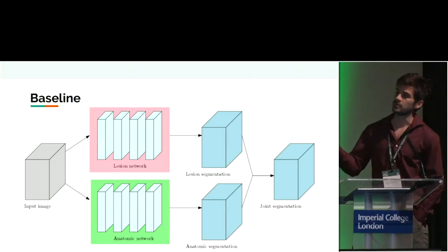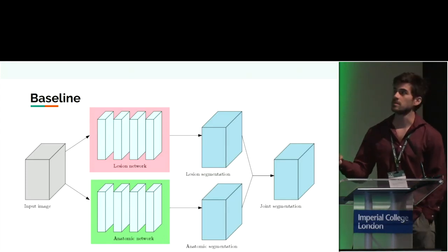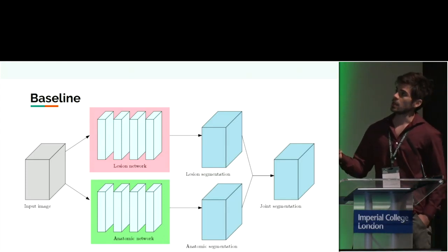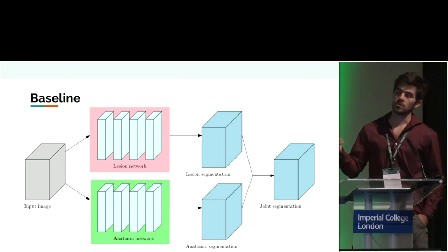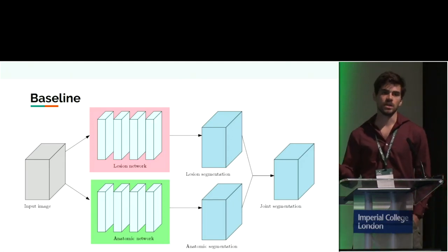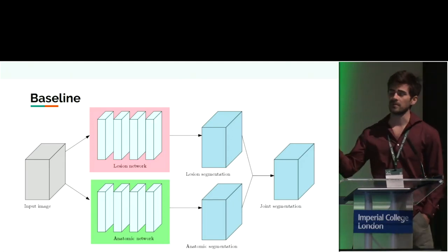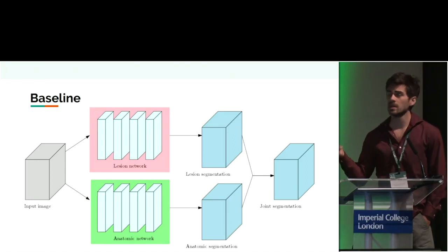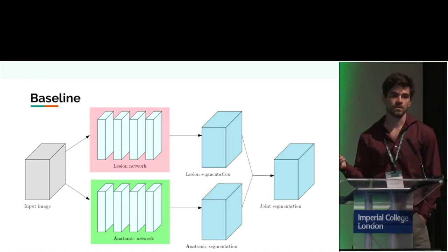However, there are drawbacks: we have two networks, so double the cost to evaluate new images, and there are many choices of parameters. What we wanted was a single model with the same performance but using only one network.